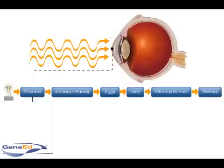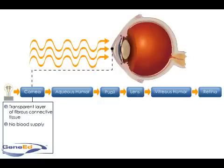The cornea is a transparent layer of fibrous connective tissue that has no blood supply. The cornea is the first intraocular structure that refracts, or bends, light rays.